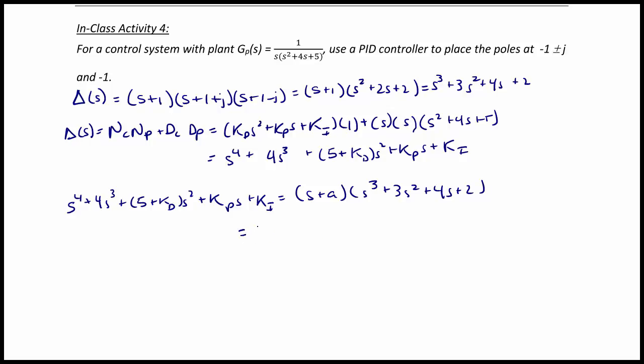And when we multiply this out, we get s to the fourth plus a times s cubed plus 3s cubed plus 3a s squared, plus 4 s squared, plus 4a s, plus 2s plus 2a.